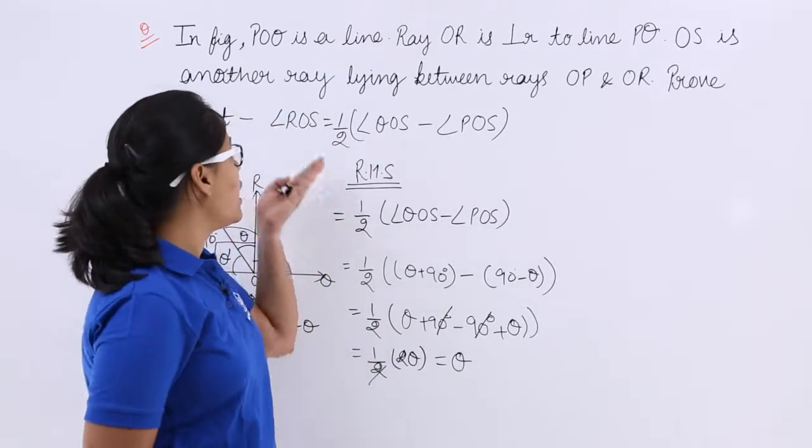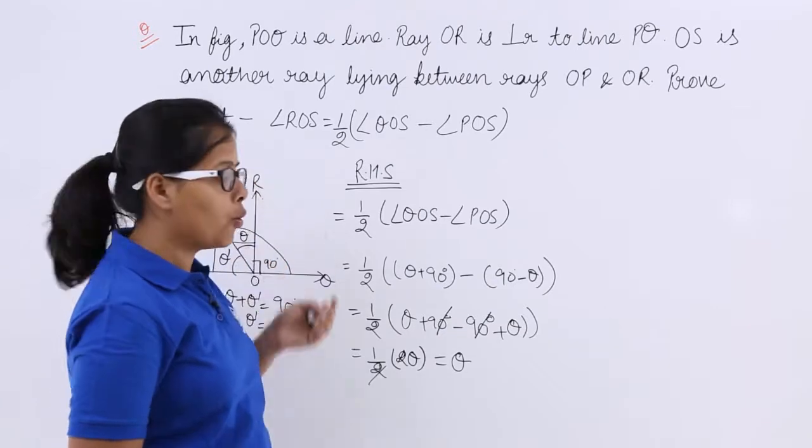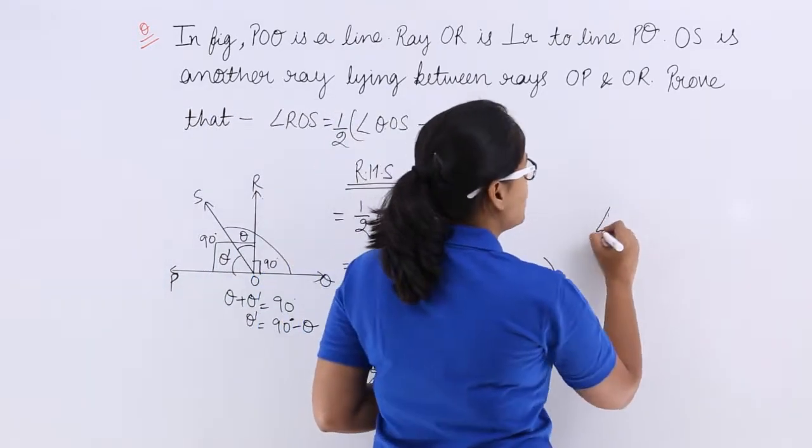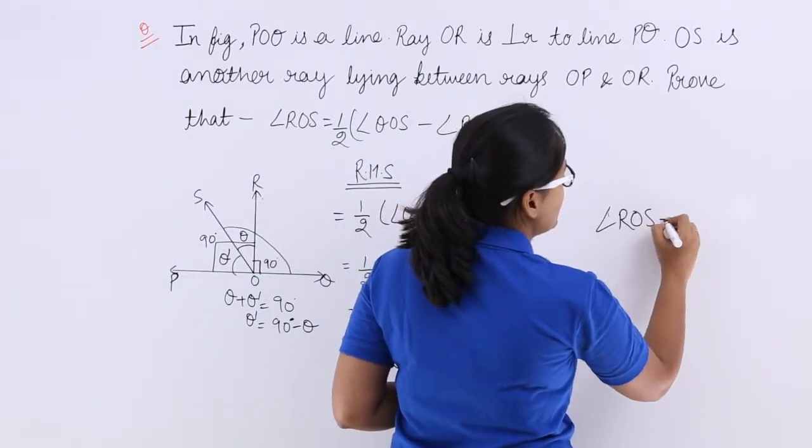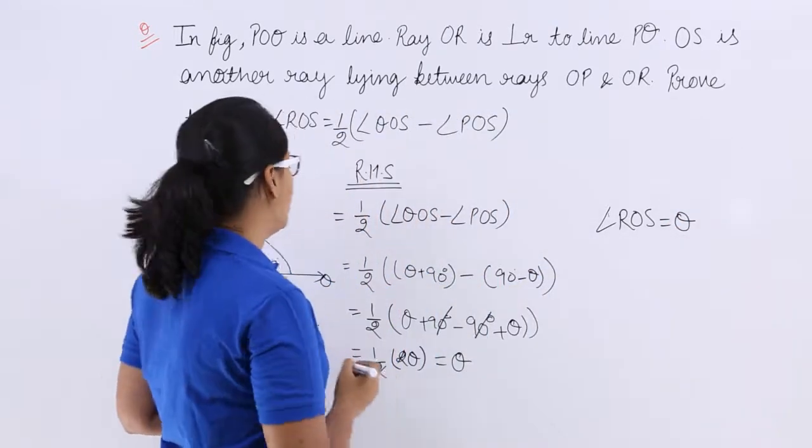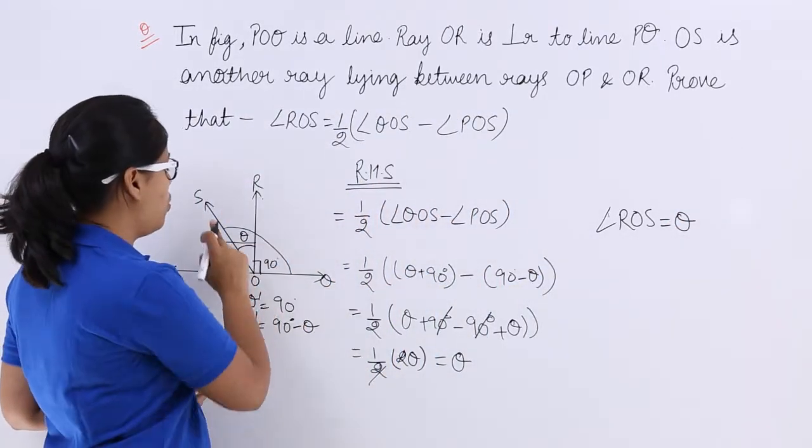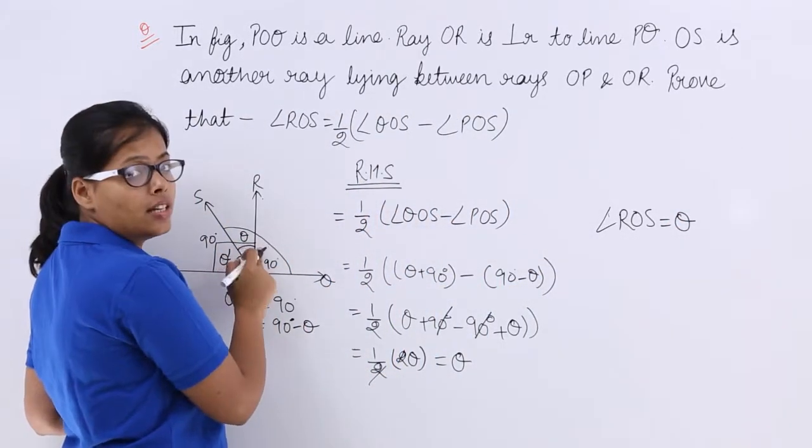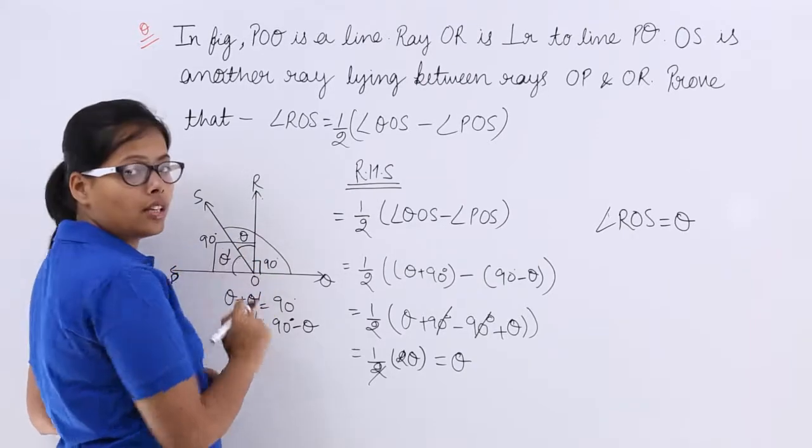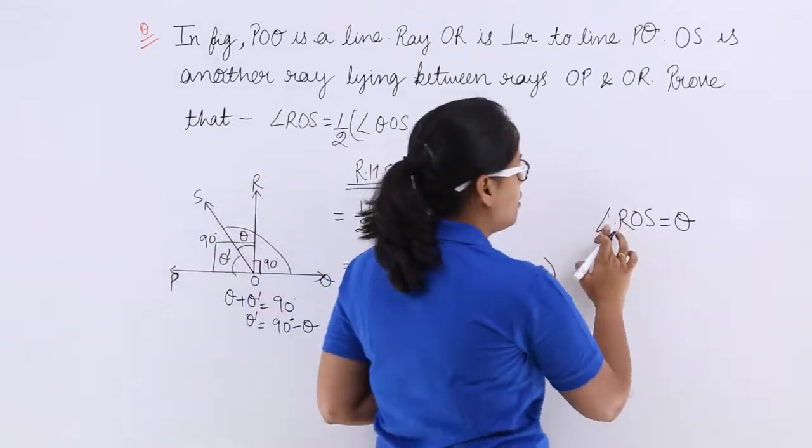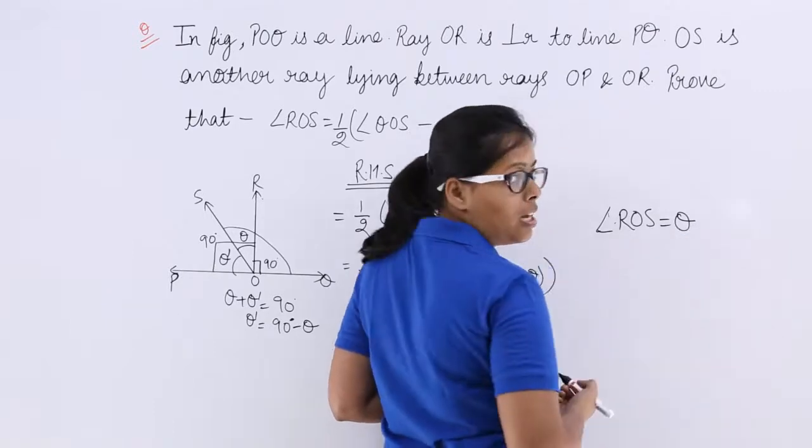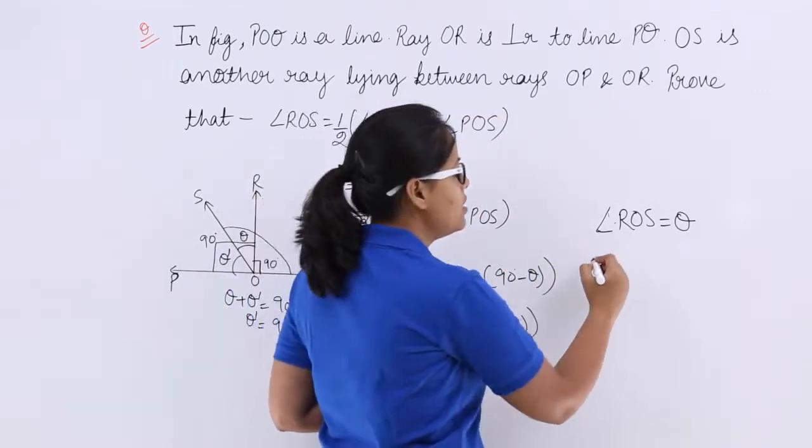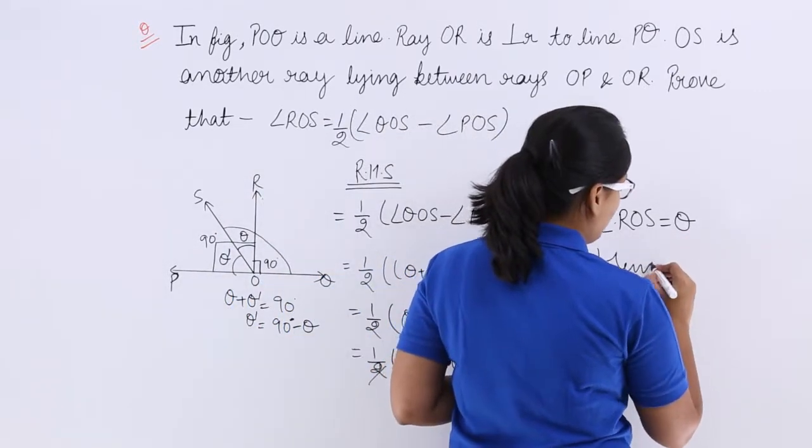Now you know theta is the exact angle of ROS. So what is coming out to be: ROS is equal to theta. Now see here, ROS the value for this is angle subtended on O is theta. You can see here ROS is coming out to be theta. Hence proved.